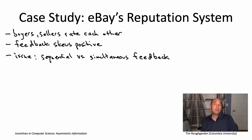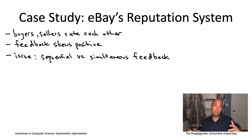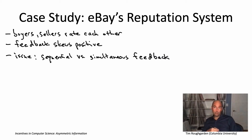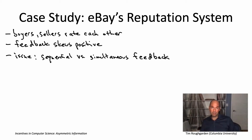On eBay, the decision has always been to have sequential feedback — it happens asynchronously. Whenever either side leaves feedback, it's immediately delivered to the other side. The issue with sequential feedback is it opens the door for retaliation: if you're a buyer unhappy with a seller and you leave negative feedback, the seller finds out immediately and can retaliate.